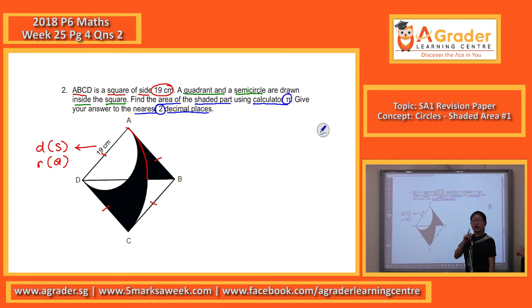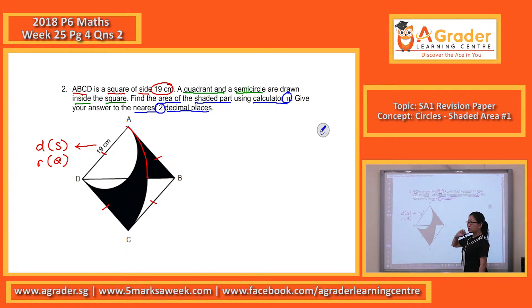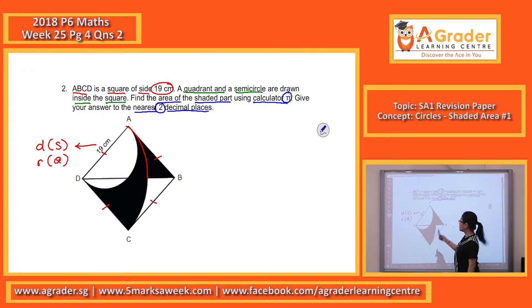And this part is actually two equal parts. Why can I say that it's two equal parts? Because it's cut into two. You look at this BD, this line. BD, this line, is what we call the diagonal of a square. When we have a diagonal within a square, it cuts everything equally into two. So it becomes easy now to find this part - quadrant minus semicircle, to find this part - square minus quadrant, divide by two.